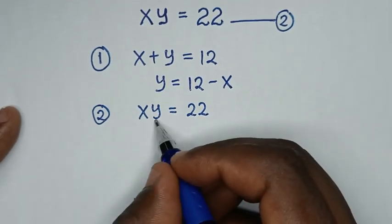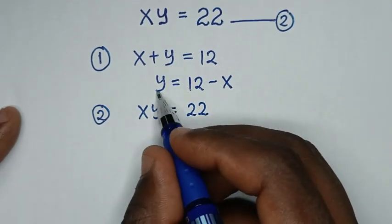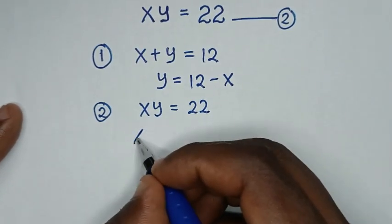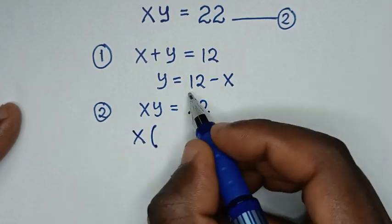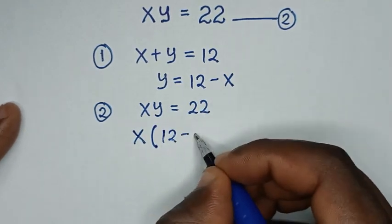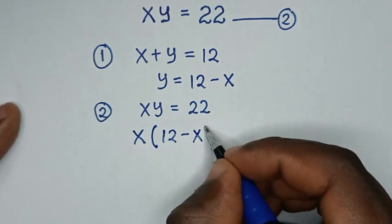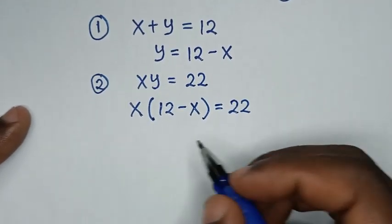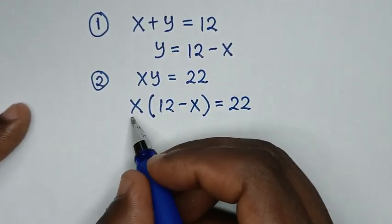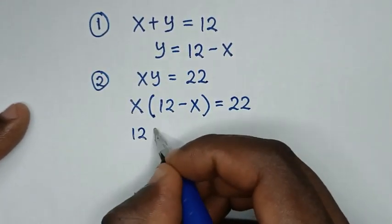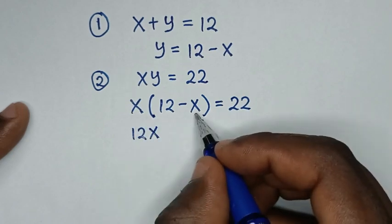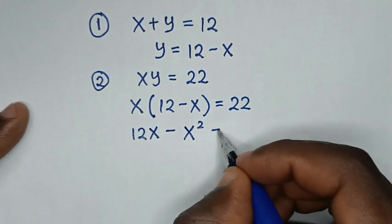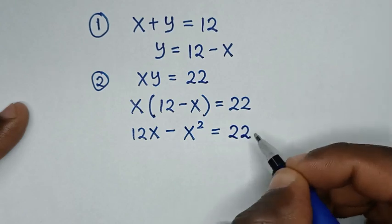We will take x to the right side, so it will be y is equal to 12 minus x. Then in the next step, from equation 2, which is x times y is equal to 22, we substitute y, which is 12 minus x. So it will be x times (12 minus x) is equal to 22. Expanding: x times 12 is 12x, x times negative x is negative x squared, is equal to 22.